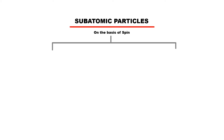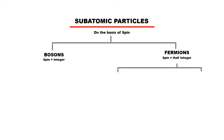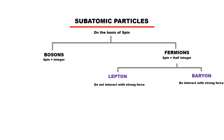Classifying subatomic particles according to their spin, the particles are of two types: particles of integer spin known as bosons, and particles of half-integer spin known as fermions. But not all fermions are the same. Some fermions do not interact with the strong nuclear force — these are called leptons — while some fermions do interact with the strong nuclear force, and they are called baryons.